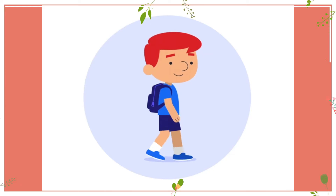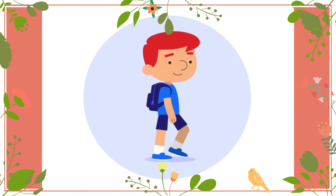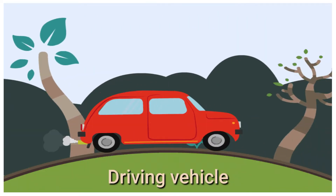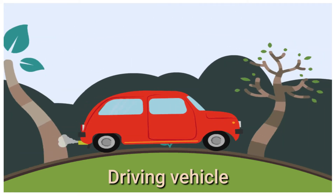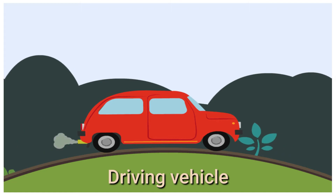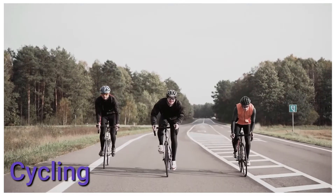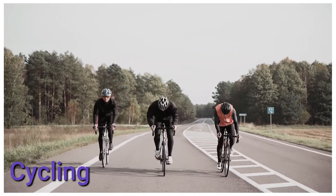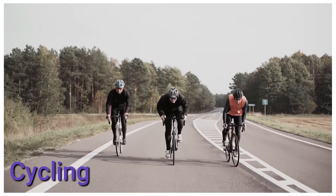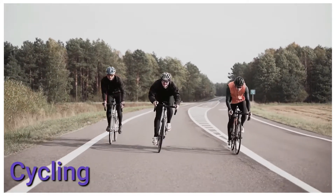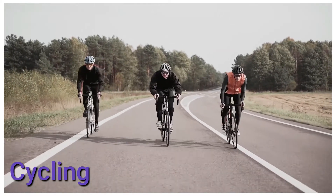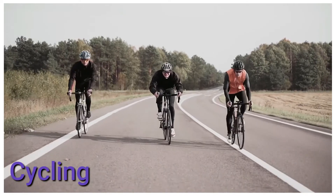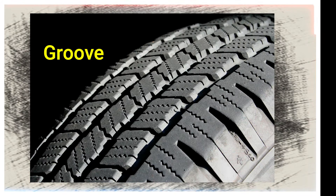Friction holds your shoes to the ground so you can walk. When driving a vehicle or riding a bicycle, friction occurs between the wheel of the vehicle and the surface, which enables you to drive. The grooves present on the wheel also exert friction.